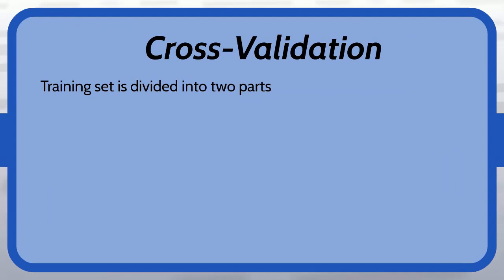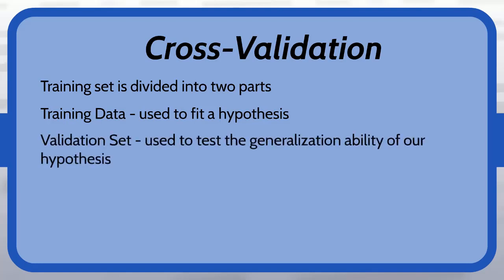So this brings us into the process of cross validation. We are going to divide our data, the data that we have into two parts for this process. The first part is going to be the training data and we are going to use that to fit a hypothesis. And then on the flip side of that, we are going to have the validation set, which is going to be used to test the generalization ability of our hypothesis.